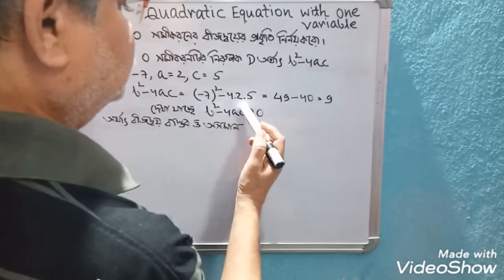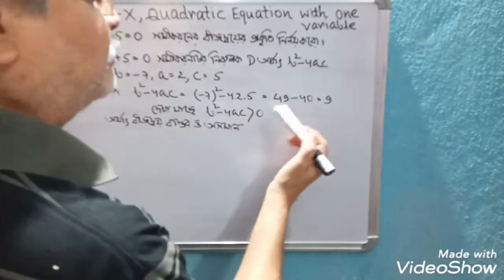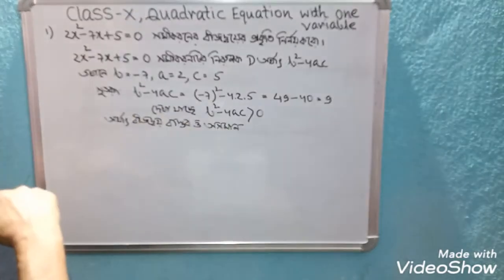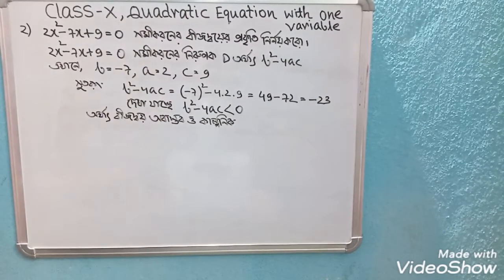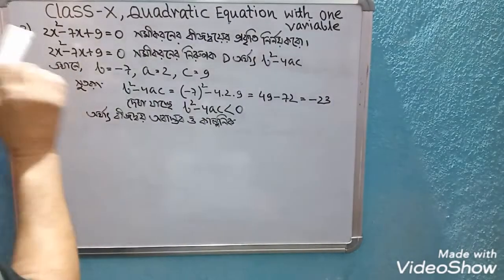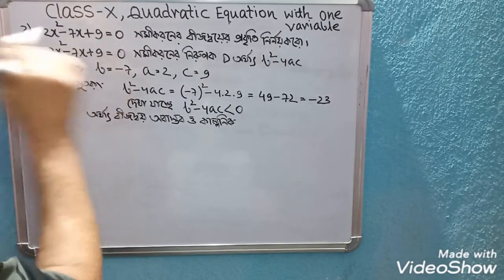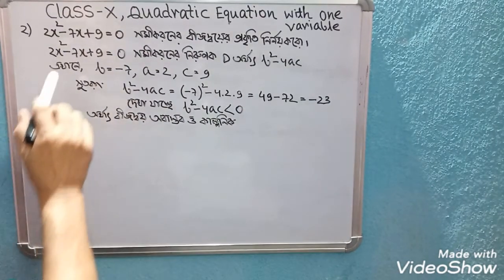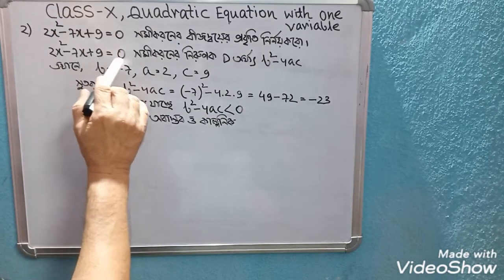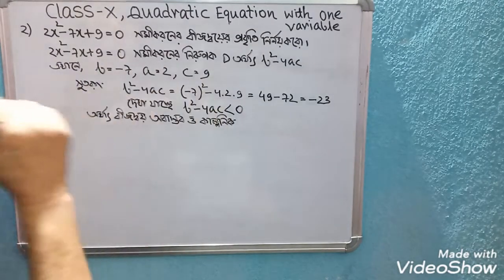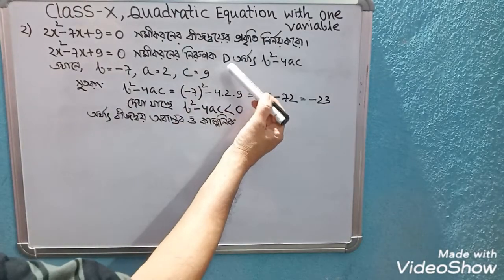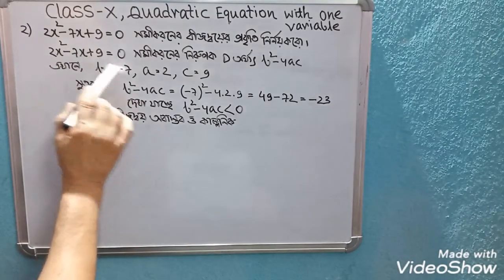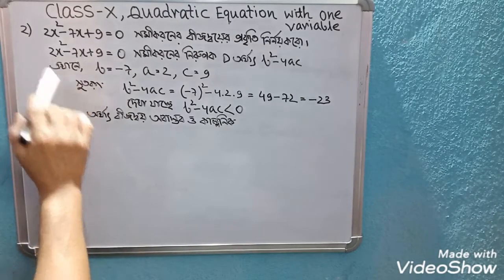We find that D equals 9, and since D is greater than 0, this equation has two real roots. Here we are identifying 2x squared minus 7x minus 9 equals 0.